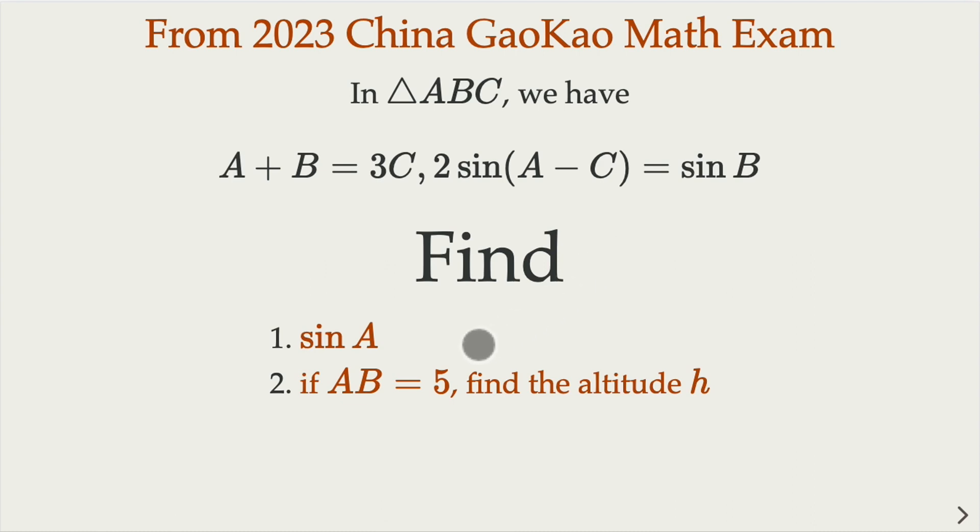We need to find in this triangle what is the sine of A. And if the base AB equals 5, what is the corresponding altitude h.